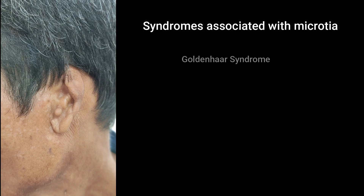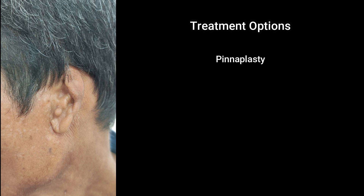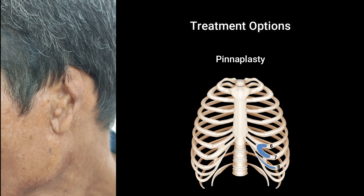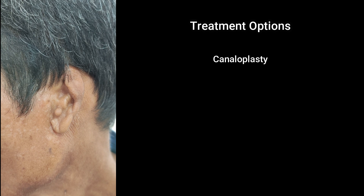These are Goldenhar syndrome, Treacher Collins syndrome, and hemifacial microsomia. After proper evaluation, this patient needs pinnaplasty. Pinnaplasty is done using rib cartilage or synthetic material. Canalplasty may be required if the canal is atretic.